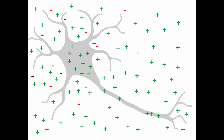For example, if one positively charged ion and one negatively charged ion both enter the neuron, they will cancel each other out, and there will be no net increase of positive charges within the neuron. It would be the same as not having any positively charged ions enter the neuron.